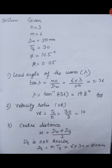Next, we find the velocity ratio, which is given by Tg upon n, where the number of teeth on the gear is 30 and n — the number of starts — is 3. Therefore, velocity ratio equals 30 divided by 3, which equals 10.